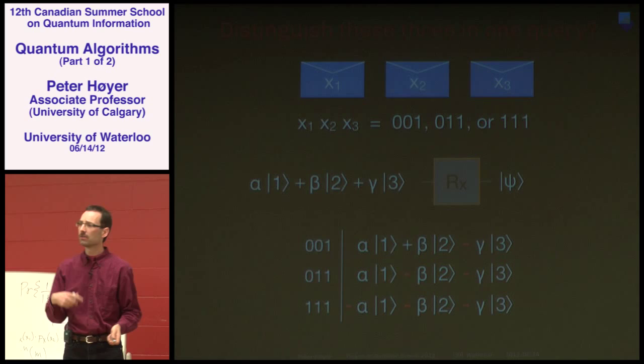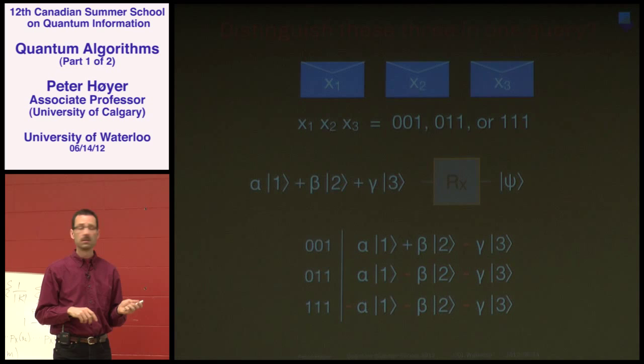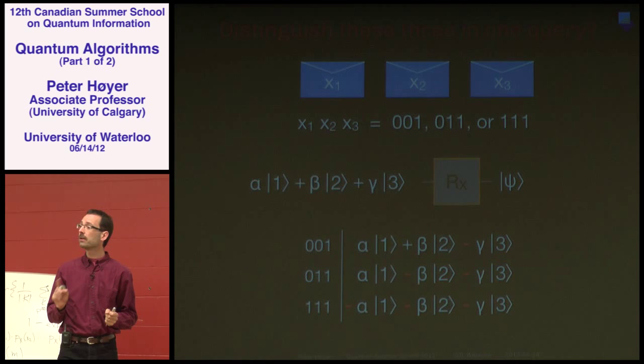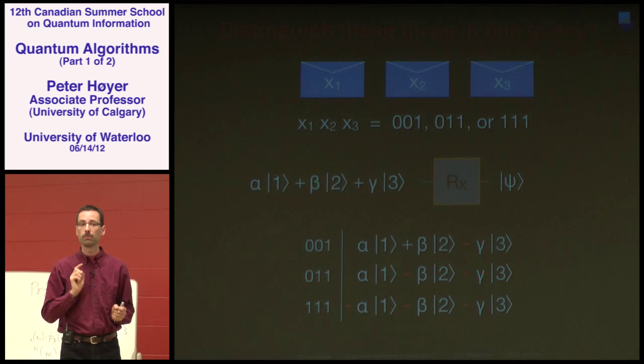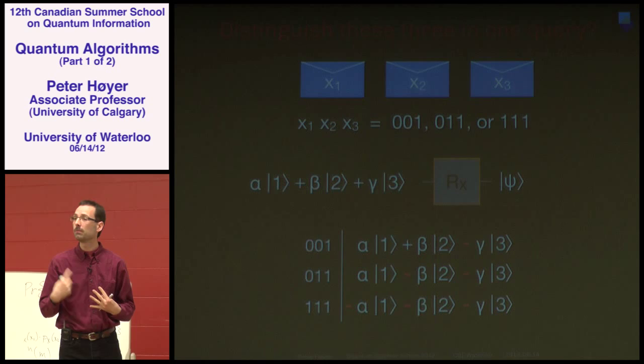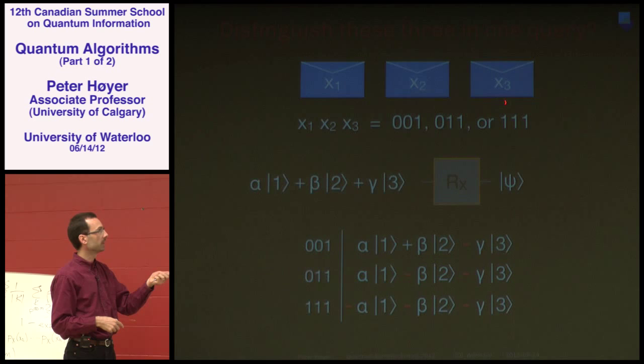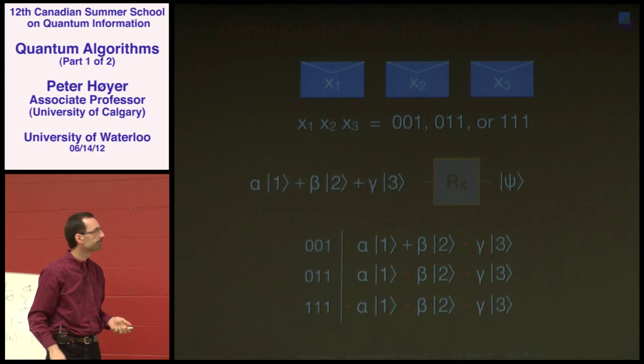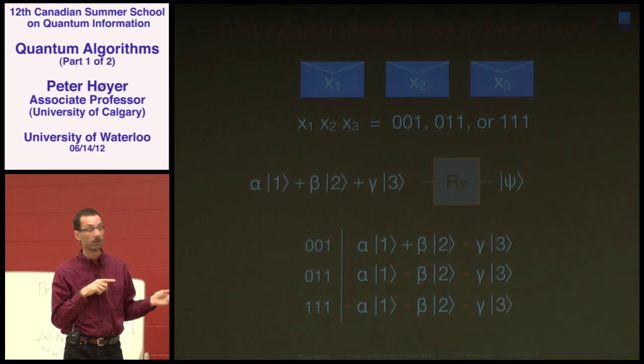Let's do binary searching. With three envelopes containing either 0,0,1 or 0,1,1 or 1,1,1, we want to find the position of the leftmost one. This corresponds to binary searching — like looking up a name in a phone book knowing the name is present. We set up a superposition with amplitudes alpha, beta, gamma (summing to one in norm), apply the phase oracle, and get one of the possible output states depending on the oracle.